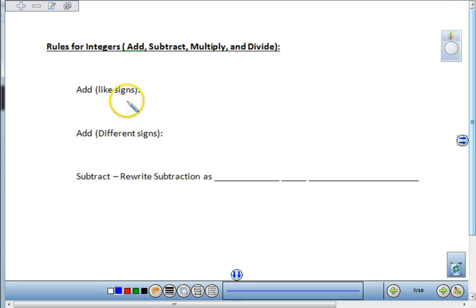What do you do when you add like signs? I would like for you to give me the rule and then also give me an example. When you add, you're going to give me the rule and then put an example. What about when you add negative 2 plus negative 3? If you explained in your rule, you should now be able to show me that as an example.